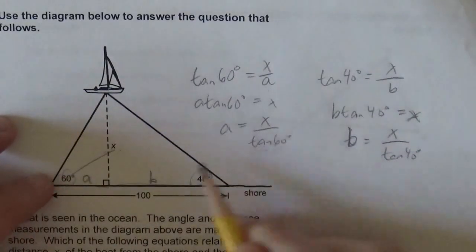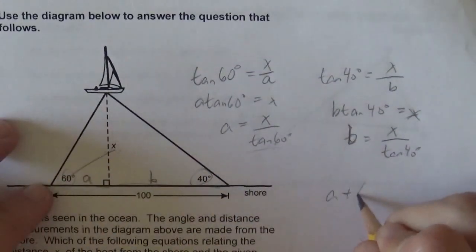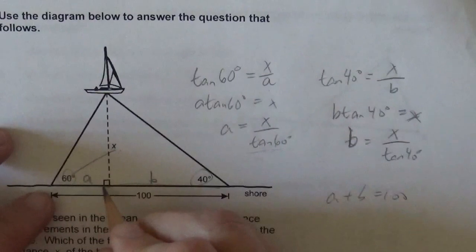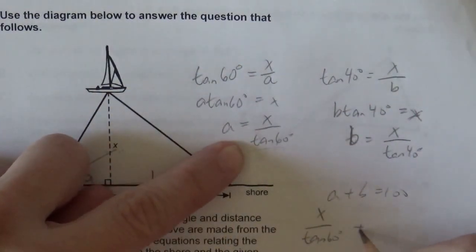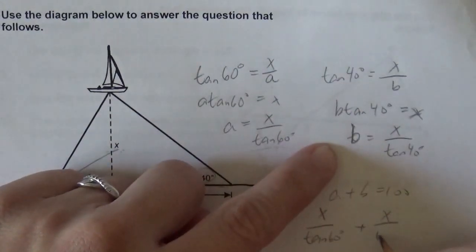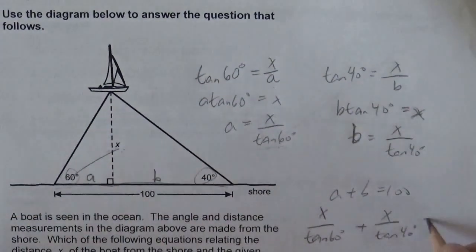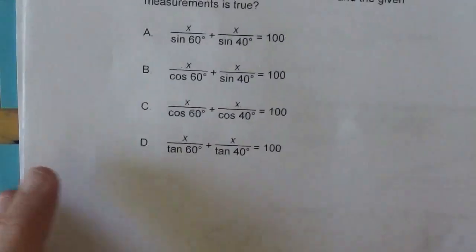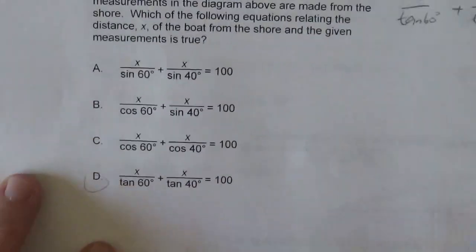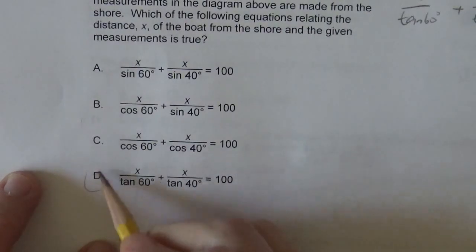And then I know that A plus B is 100, because that plus that is 100. So x over tan 60 plus x over tan 40 is 100. And I think I see that right there. x over tan 60 plus x over tan 40 is 100.